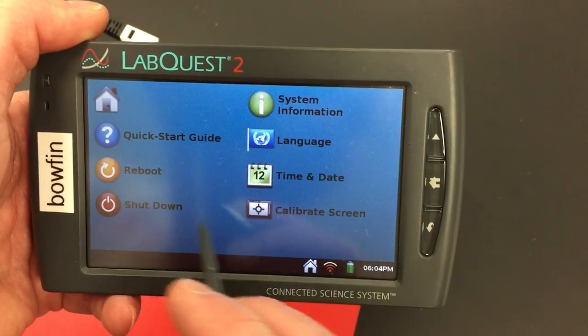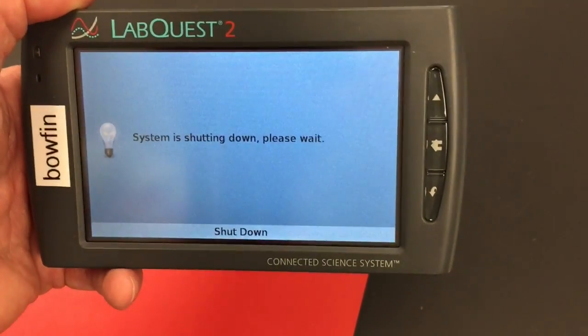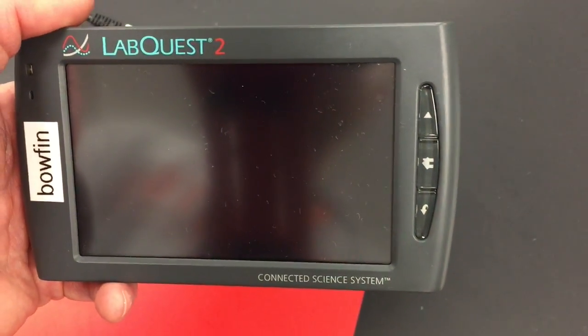Then hit the home button, system, and shut down. And that's the best way to shut it down. Anything else is just going to put it in standby.